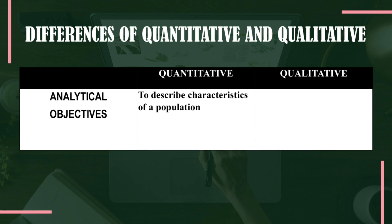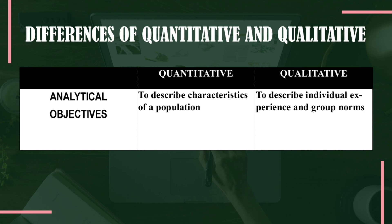The next difference is that quantitative research describes characteristics of a population. For example, if your chosen population is the senior high school students in Ali National High School and there are 1,000 students, it does not mean all 1,000 will partake in your study — you need to utilize Slovin's formula to identify the sample size. In qualitative research, individual experiences and group norms are described, and the number of participants is generally lesser compared to quantitative research.